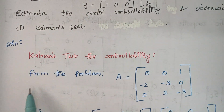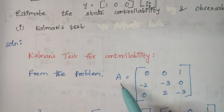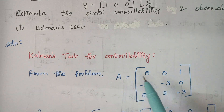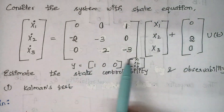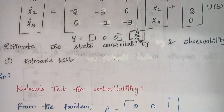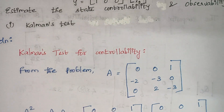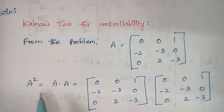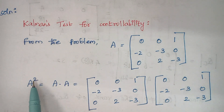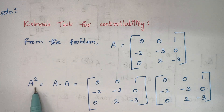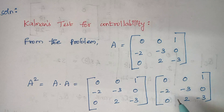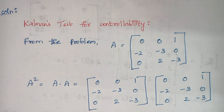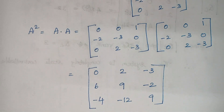From the problem we are taking the A matrix. This is your A matrix. First we are checking for controllability. The next thing we need to calculate is A squared. A squared is nothing but A multiplied by A. So A multiplied with A here. When you do the multiplication we end up with a matrix like this.